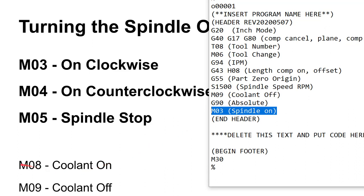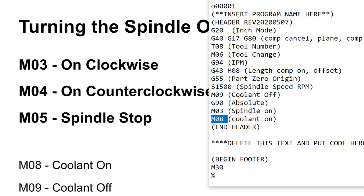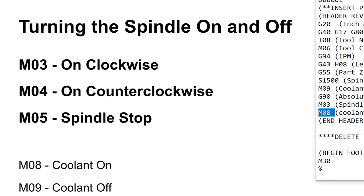We could also put in M08, which turns the coolant on. The stuff in parentheses are just comments, but M08 does the job. If we wanted coolant on this operation, it would go there — somewhere before we start cutting. You do want it well before cutting begins, because there's a lag between turning coolant on and it reaching the nozzle. You don't want to heat the tool by cutting and then splash it with cold coolant — the thermal shock can be worse than not having coolant at all.